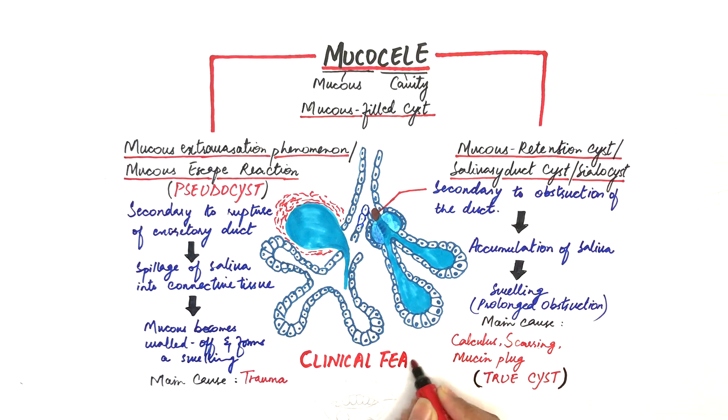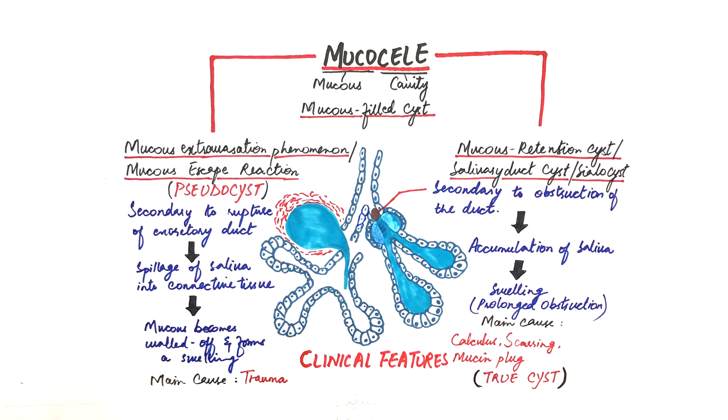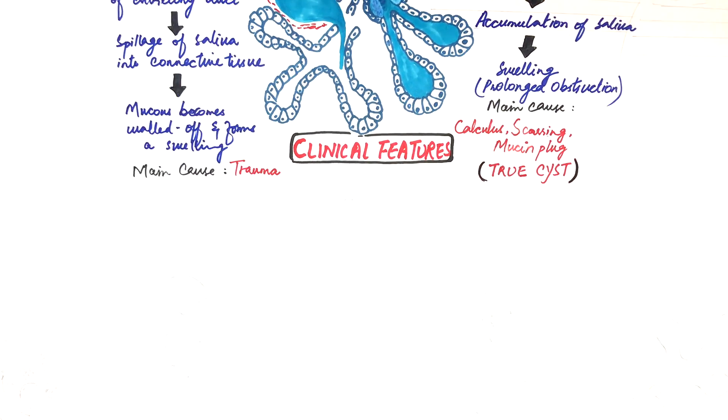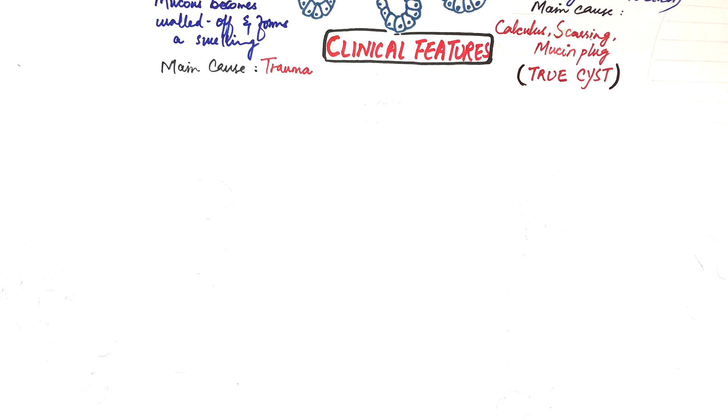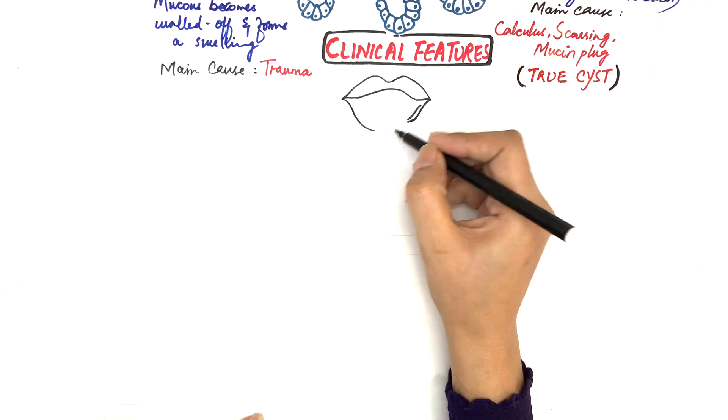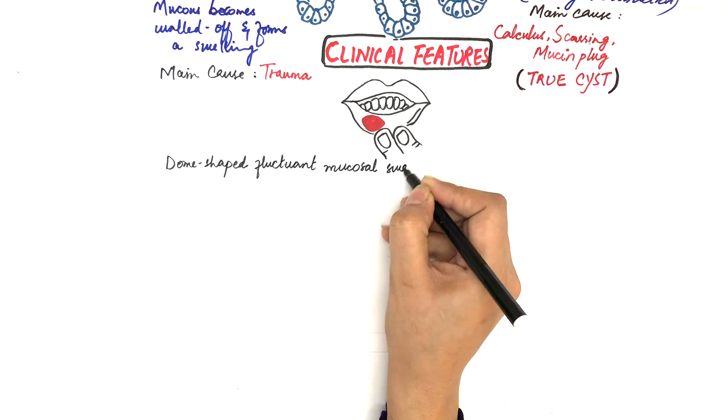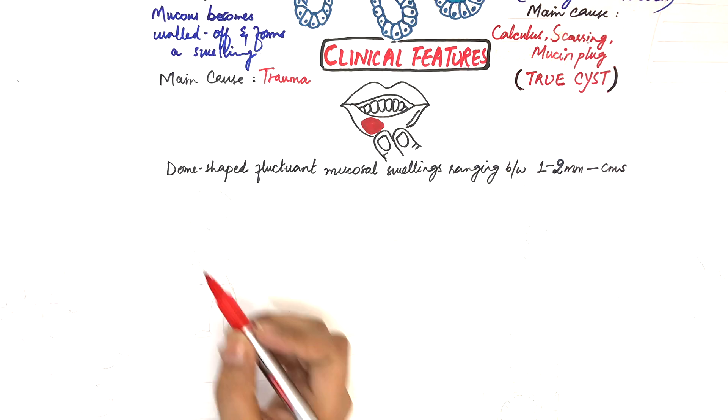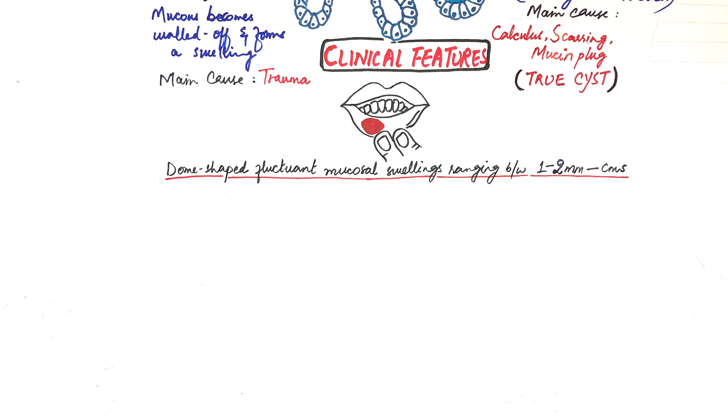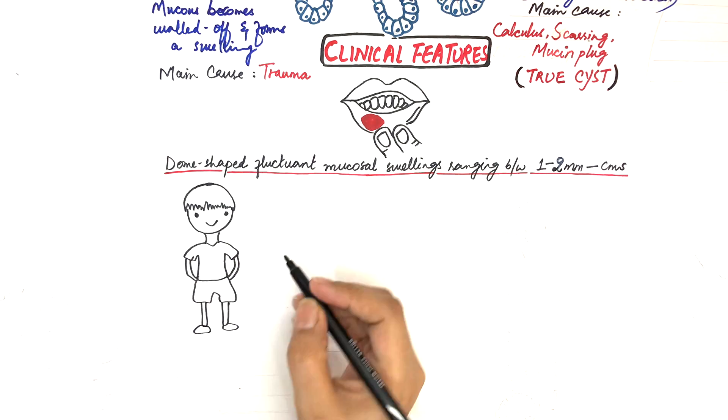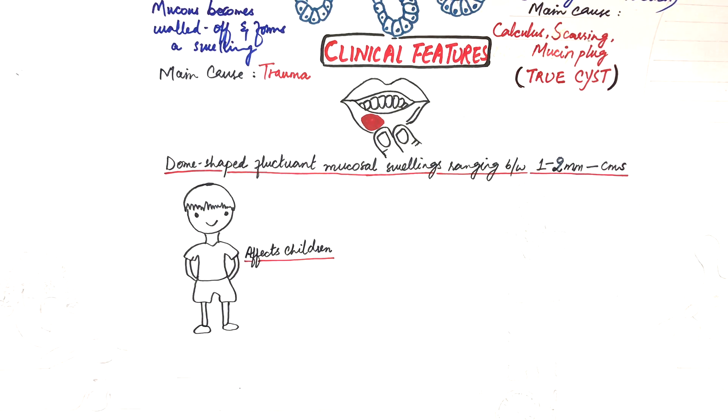Let's now talk about some clinical features of both of them. Both extravasation and retention types appear as dome-shaped fluctuant mucosal swellings ranging between 1 to 2 mm to several centimeters in size. By fluctuant, it means the lesion is movable. In extravasation type, since trauma is the main cause, it most often affects minor salivary glands of children. And this is because children are more prone to trauma.